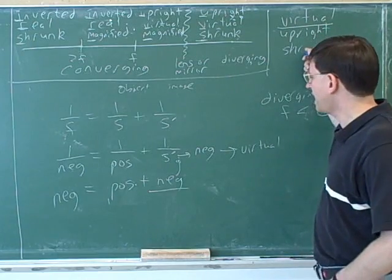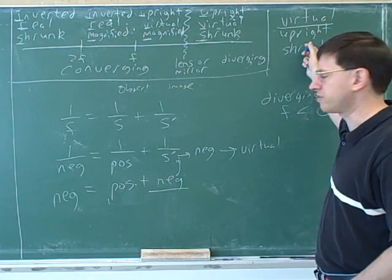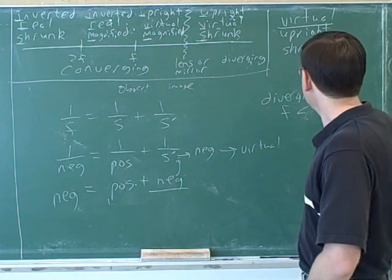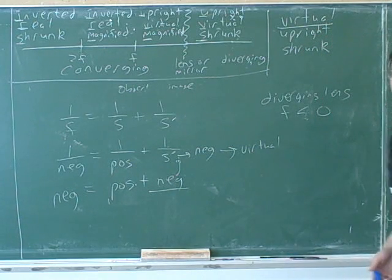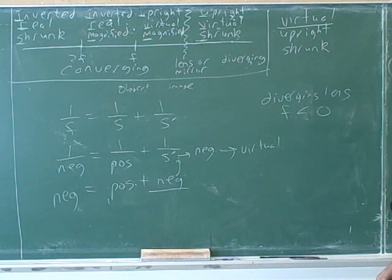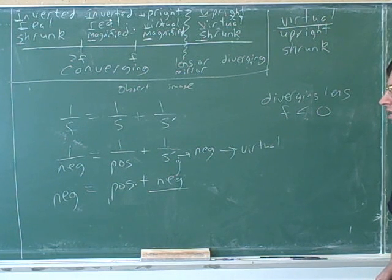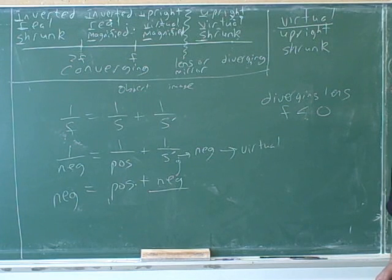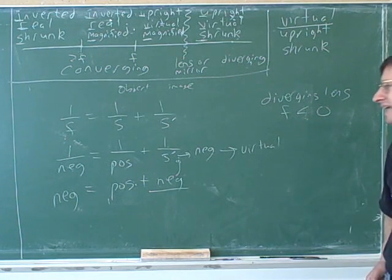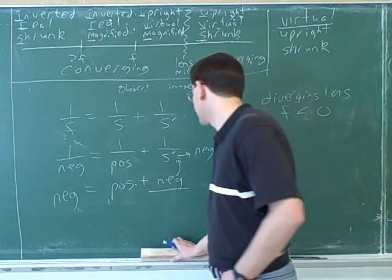How do we know that it's shrunk? What does it mean if it's shrunk? Think back to what we were just talking about for magnification. What does that tell you if an image is shrunk — what does that tell you about the relationship between the variables? If the image height is smaller, the image distance is also smaller.